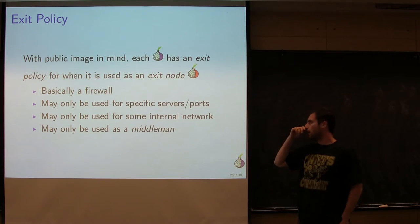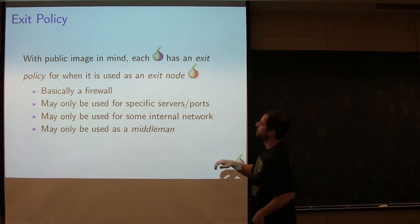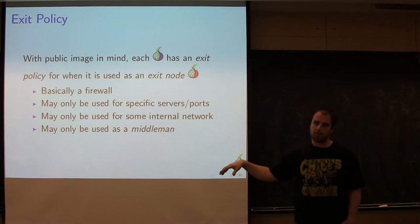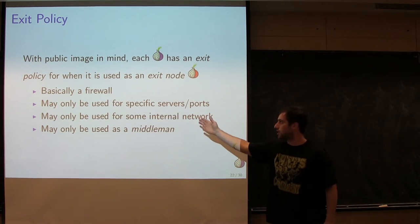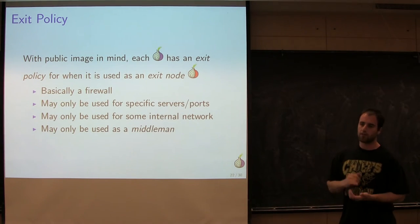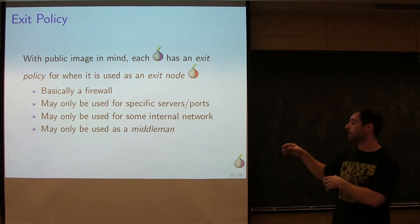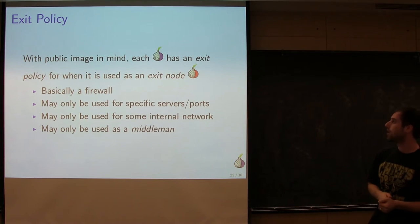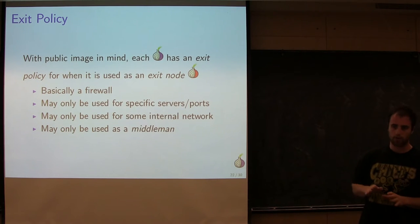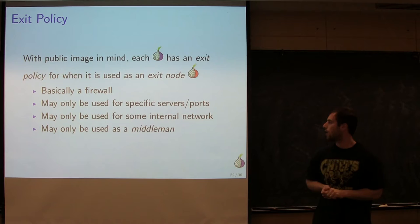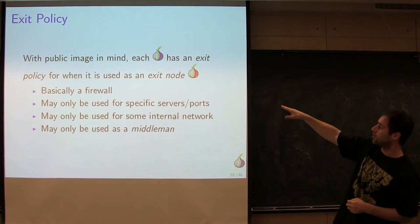Each onion router defines and advertises an exit policy. If you choose a particular onion router as your exit node, you're subject to that exit policy — basically a firewall that says you can or cannot talk to certain websites from this router. Some onion routers choose to only be used as middlemen, so they can't be used as exit nodes at all. Some have private networks behind them, so you can have anonymous private networks that only exist off a specific onion router.